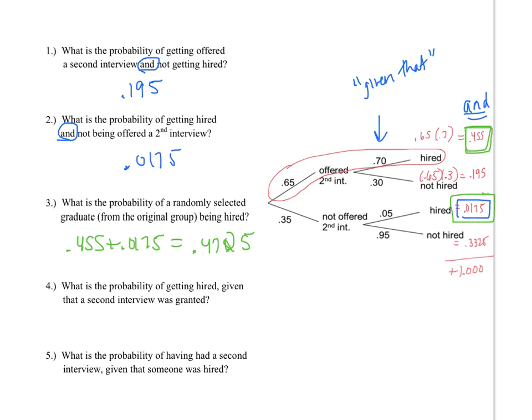Question four: what is the probability of getting hired given that a second interview is granted? When I see 'given that a second interview is granted,' that tells me which branch to follow in the middle row. The probabilities on the top branch are the path taken after getting offered a second interview, so the probability of getting hired given a second interview is simply 0.7. The products give us our AND statements, and the middle tier gives us our given-that probabilities.